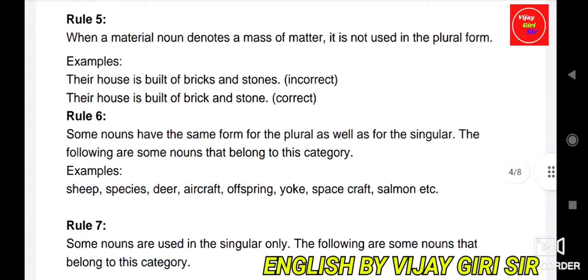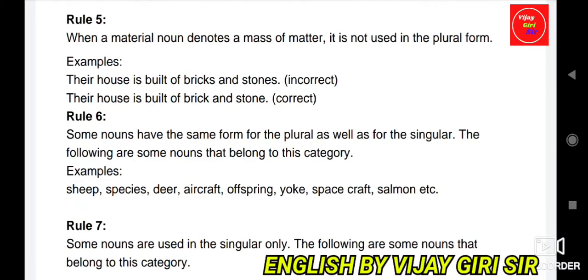Rule 5: When a material noun denotes a mass of matter, it is not used in the plural form. For example, 'Their house is built of bricks and stones' is incorrect. The correct form is 'Their house is built of brick and stone' — not bricks and stones, but brick and stone.